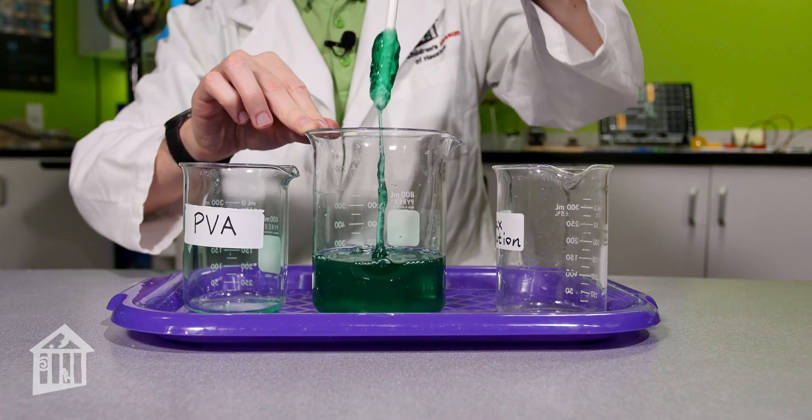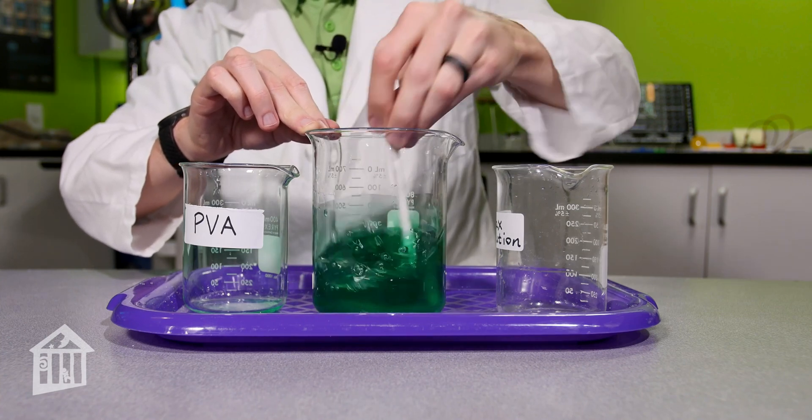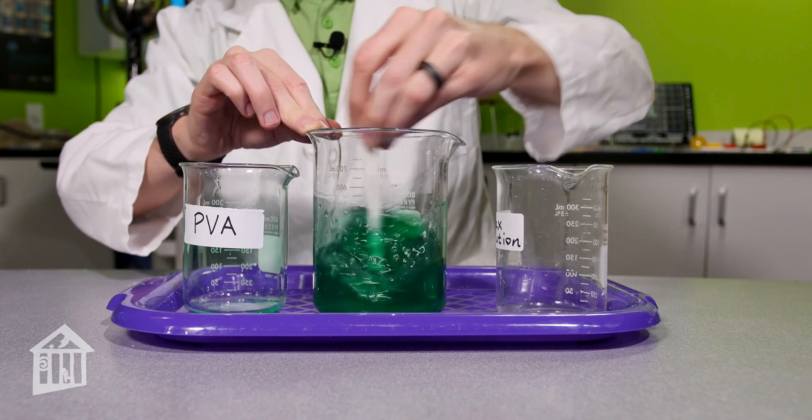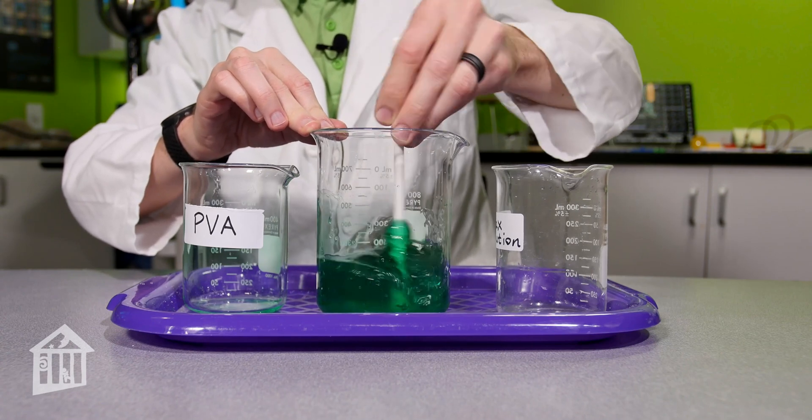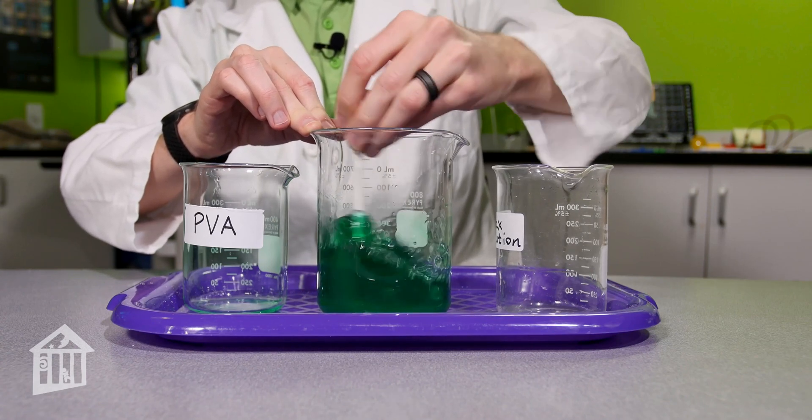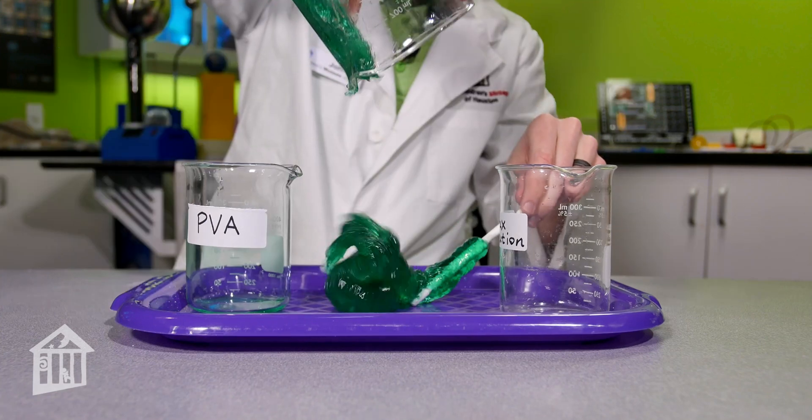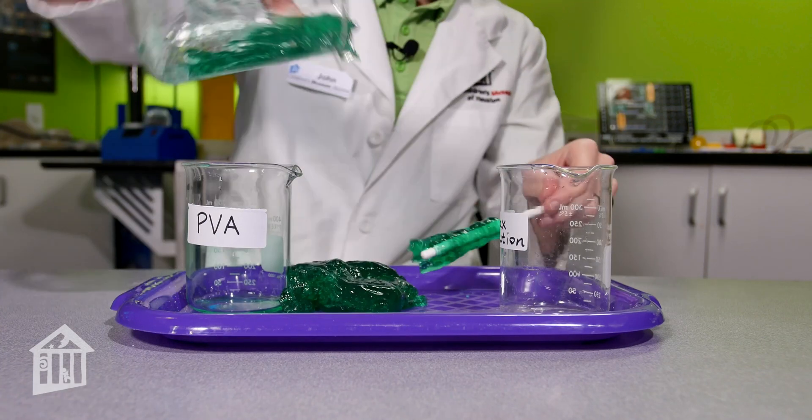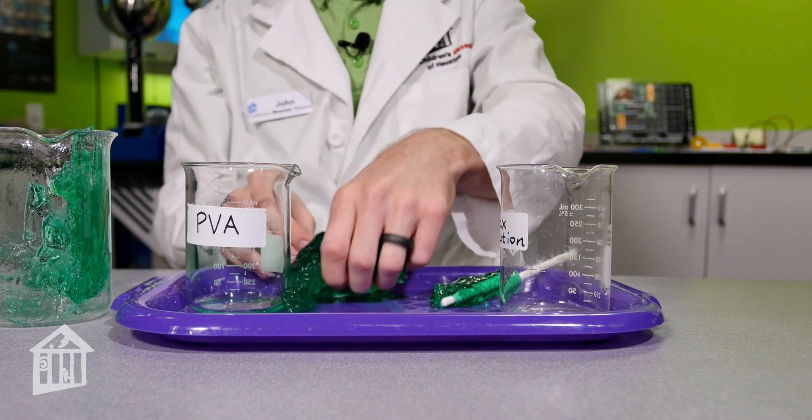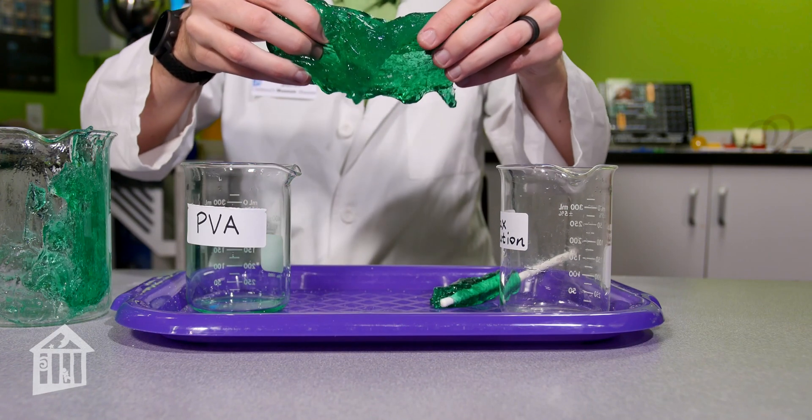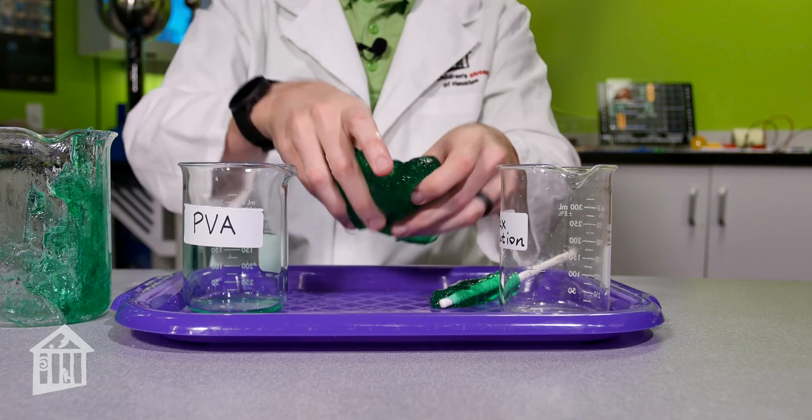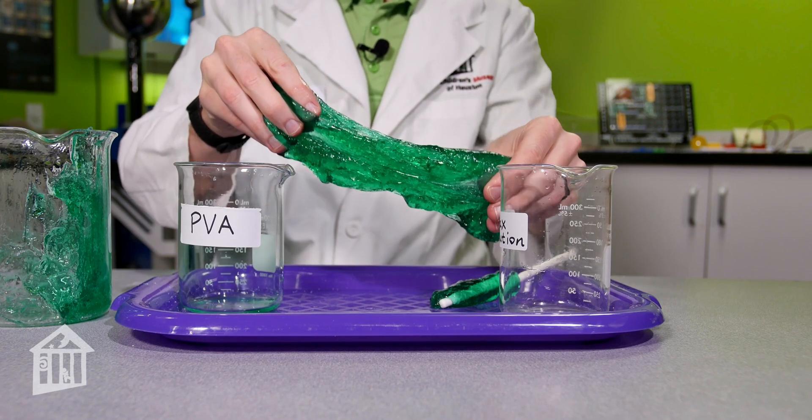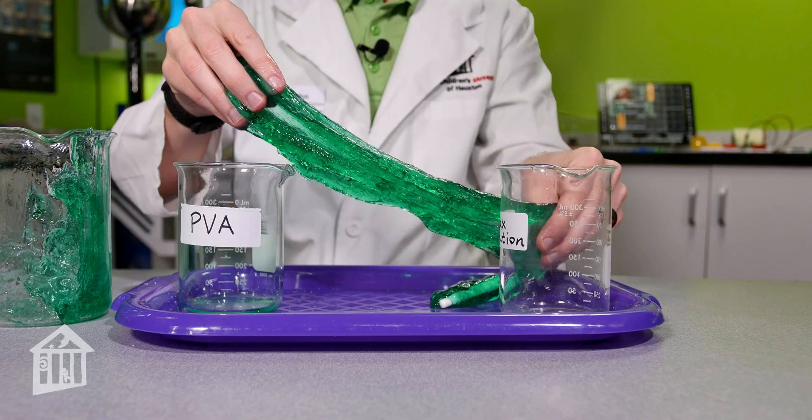Borax molecules are like tiny paper clips that hook together the long chains of PVA molecules, making this gooey concoction known as slime. The monomers are linked together in identical repetitive segments that form long chains of molecules known as polymers. The PVA used in this activity is a liquid polymer.